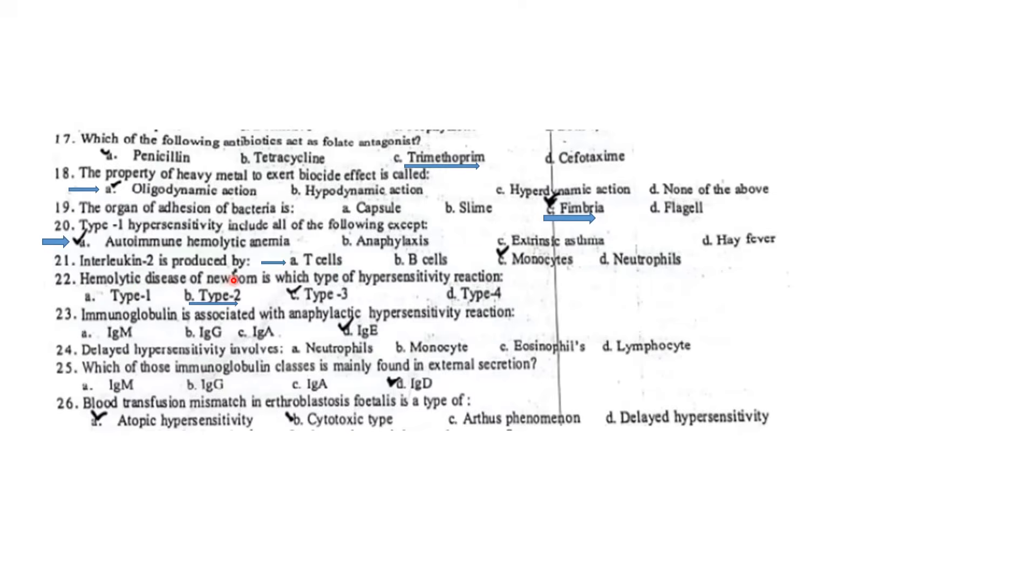Hemolytic disease of newborn is a Type 2 hypersensitivity reaction. Immunoglobulin is associated with anaphylactic hypersensitivity. Anaphylactic Type 1 hypersensitivity involves IgE antibodies. Delayed hypersensitivity involves T lymphocytes. Which of these immunoglobulin classes is mainly found in external secretions? External secretions are IgA antibodies, which we call secretory antibodies.